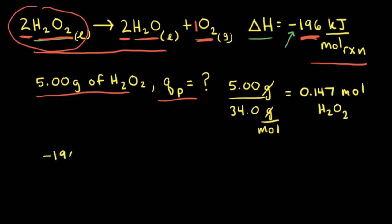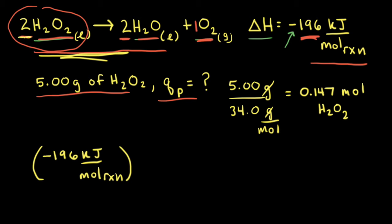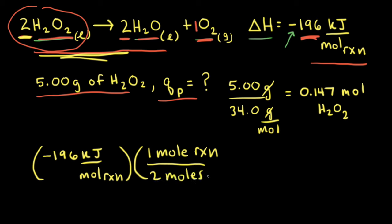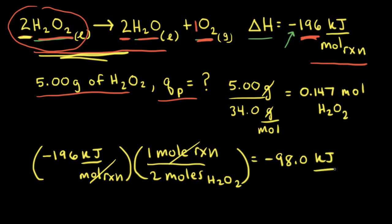Next, we take our negative 196 kilojoules per mole of reaction and multiply by a conversion factor. Looking at the balanced equation, there are two moles of hydrogen peroxide. So for every one mole of reaction as written, there are two moles of H₂O₂. The moles of reaction cancel out, giving us negative 98.0 kilojoules per one mole of H₂O₂.